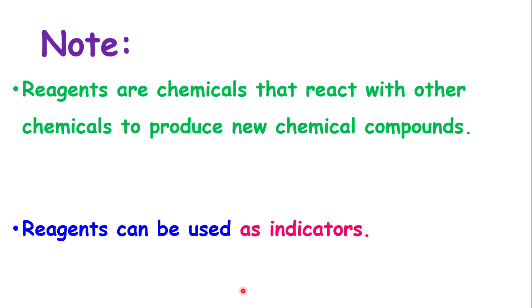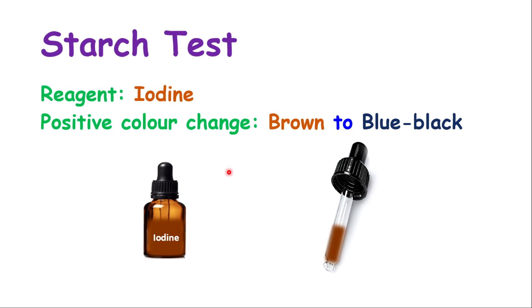Let's go into our first experiment. This first one is testing for starch. Starch is a complex carbohydrate, which means it is a complex sugar — it is made up of many glucose molecules. The reagent to test for starch is iodine, which is brownish-yellowish in color. If the food contains starch, it will indicate a positive change, turning from brownish-yellow to a blue-black color or simply black.